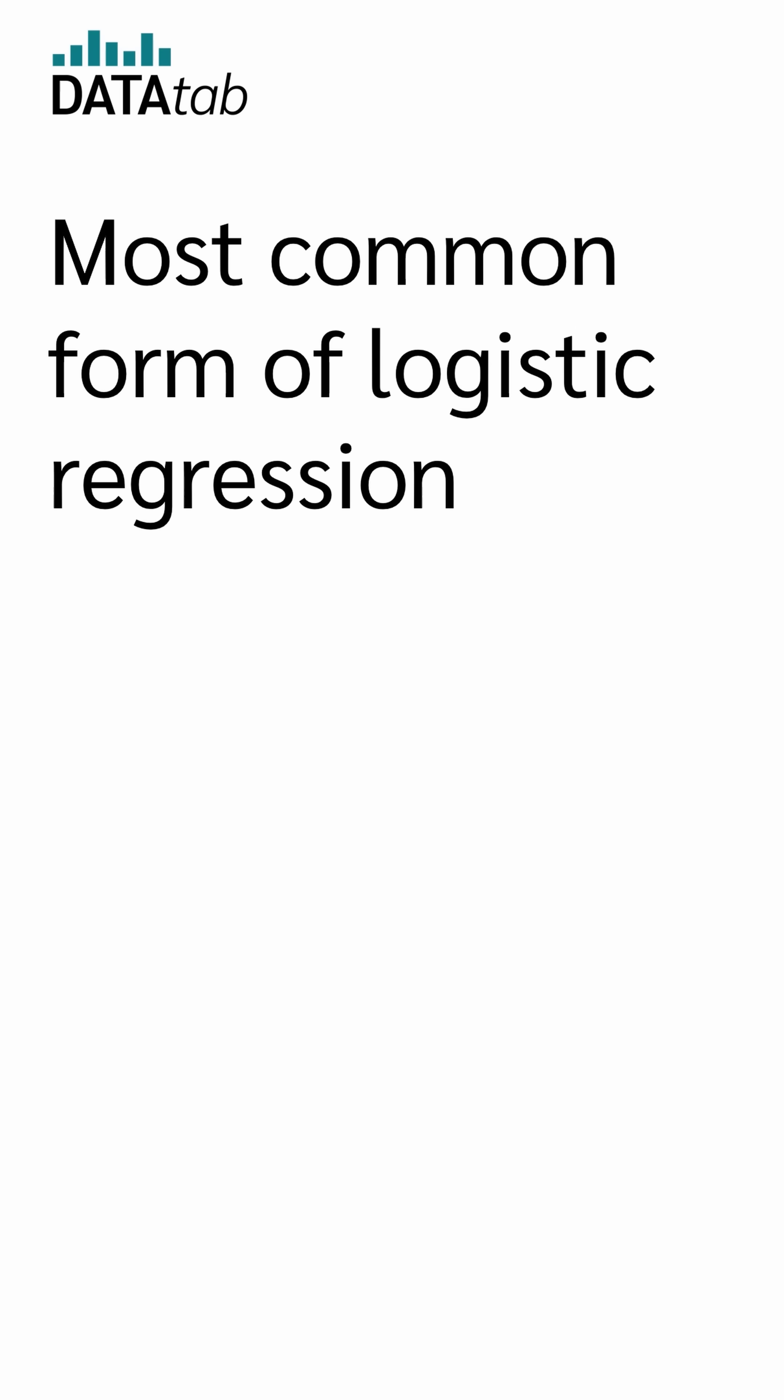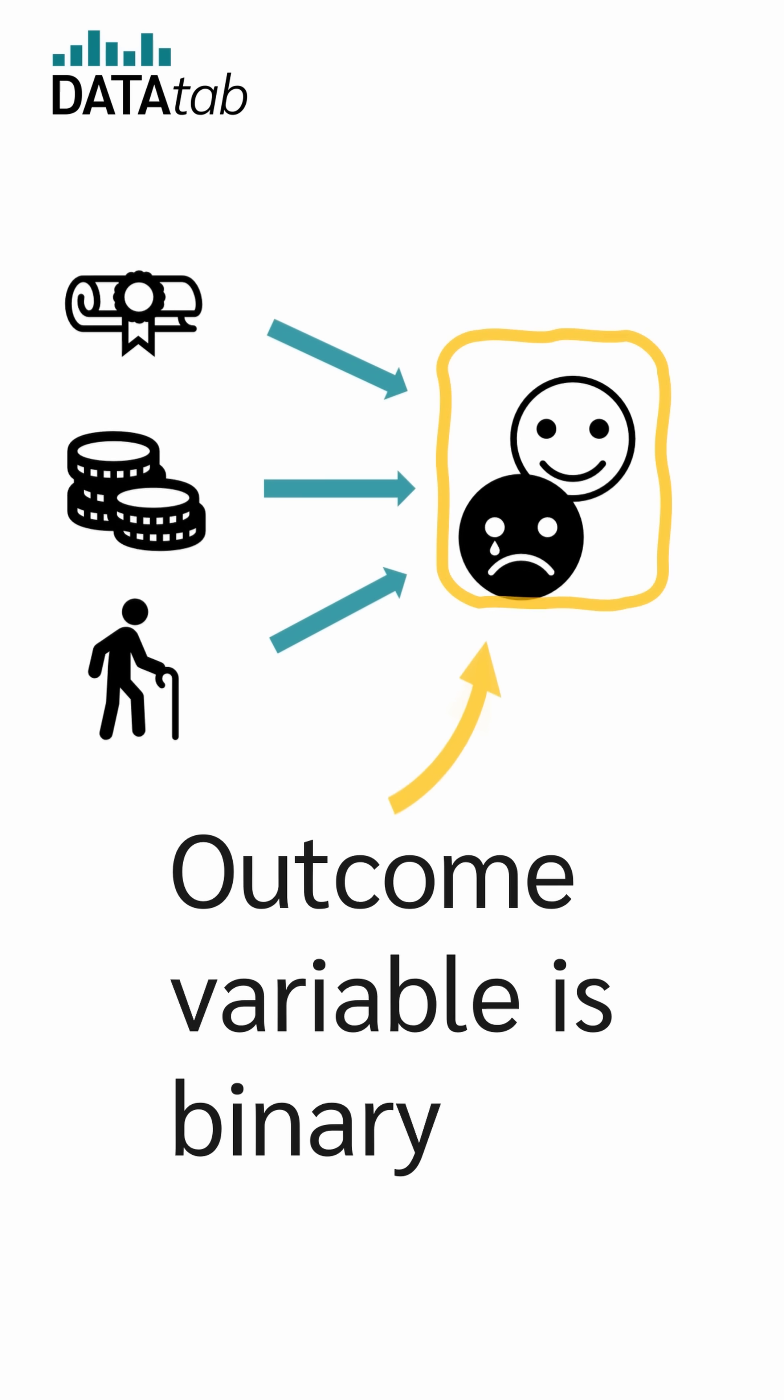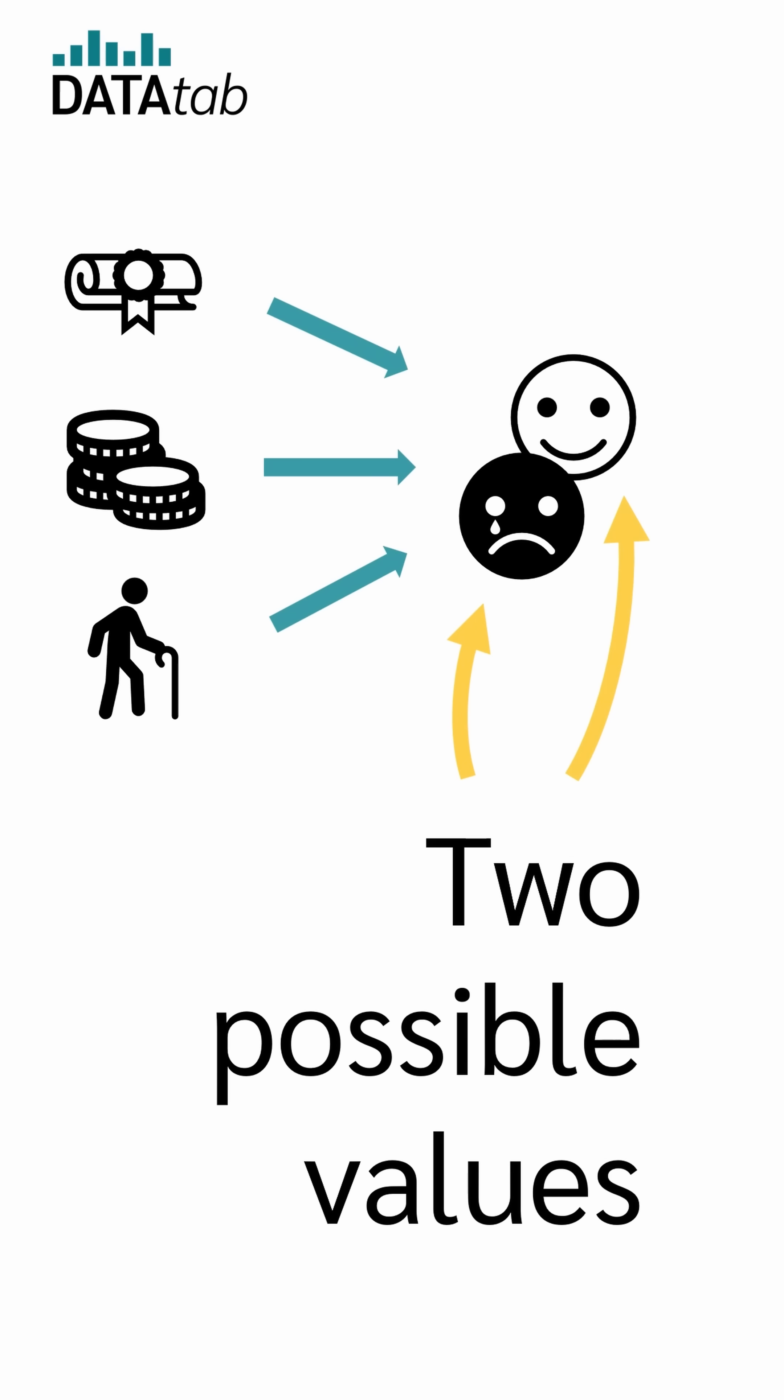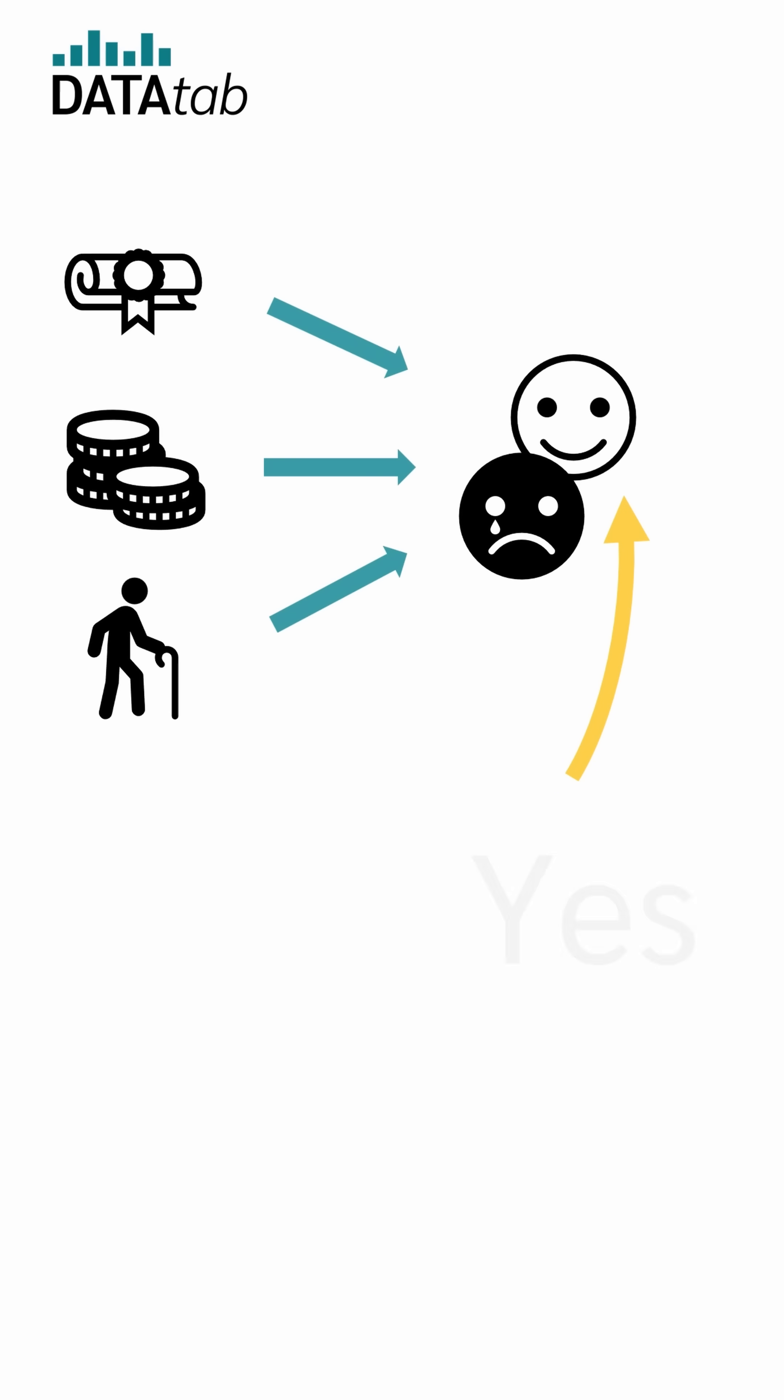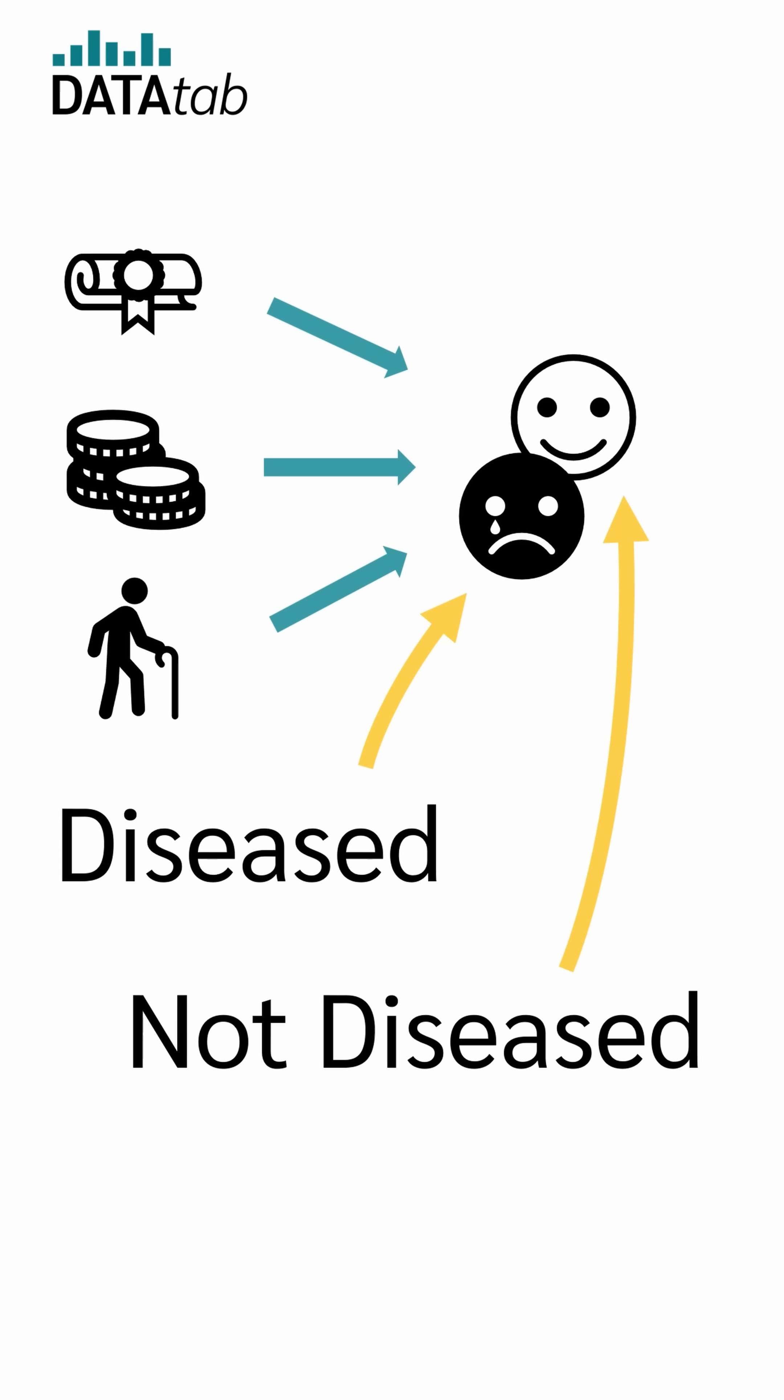However, the most common form of logistic regression is the so-called binary logistic regression. In this case, the outcome variable is binary, meaning it has two possible values like yes or no, success or failure, or diseased or not diseased.